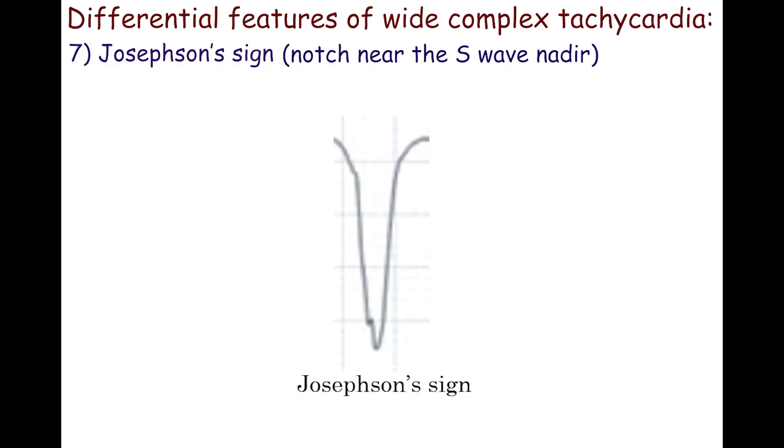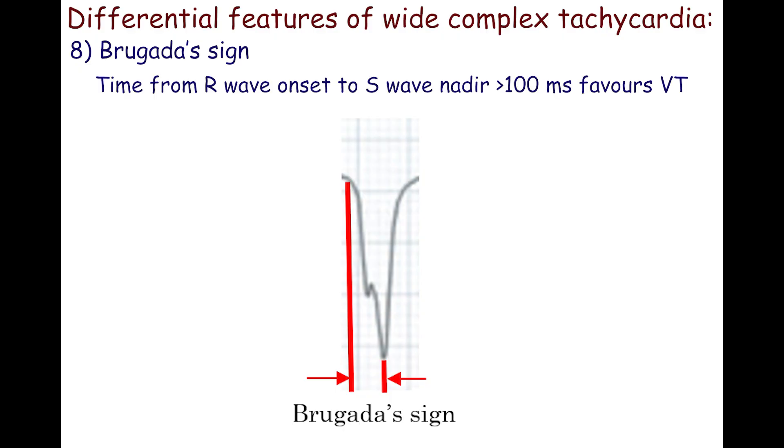The seventh feature is Josephson's sign which denotes notch near the S-wave nadir. It favors ventricular tachycardia. The eighth sign is Brugada's sign. If time from R-wave onset to S-wave nadir is more than 100 milliseconds, ventricular tachycardia is more probable.